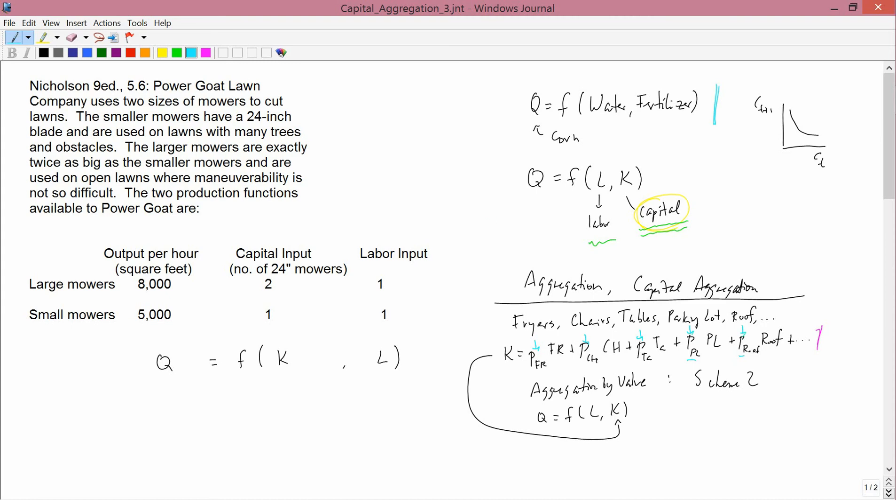And what that means is that when prices change, the production function is going to change, the isoquants are going to change, but that's not the kind of model that we're talking about. We're talking about a model where the production function just talks about technological possibilities of production. It's engineering. It doesn't have anything to do with money.